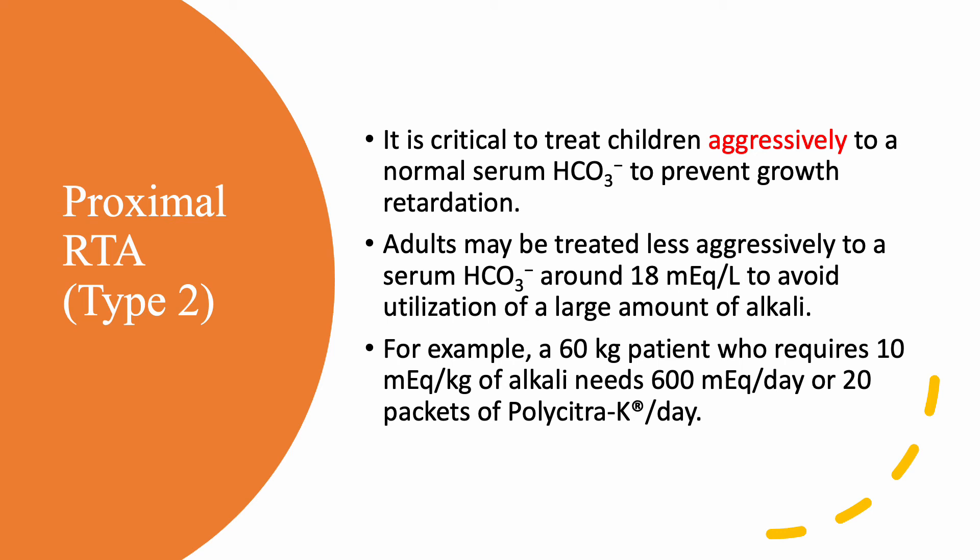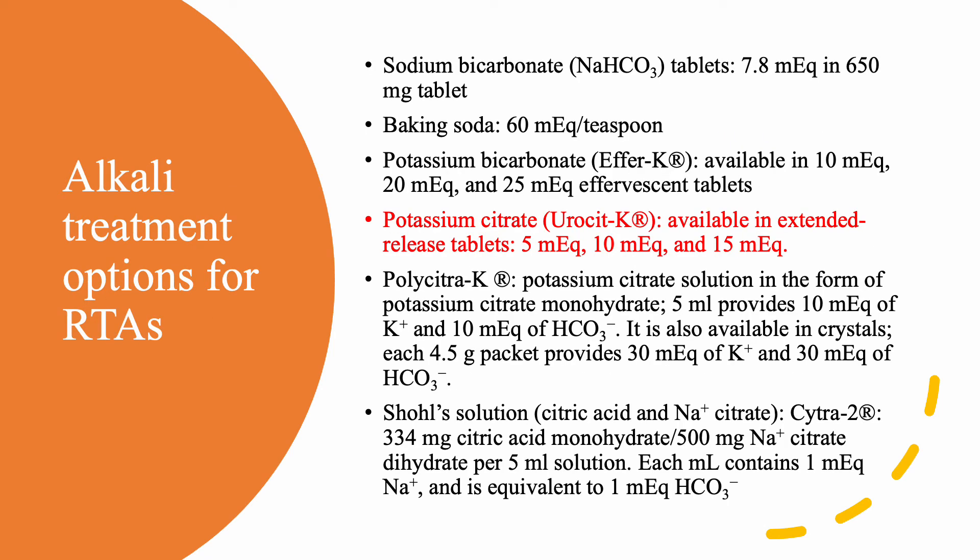For example, a 60-kilogram adult requiring 10 milliequivalents per kilogram of alkali needs 600 milliequivalents per day — that is 20 packets of polycitra potassium per day, which is not easy to manage. For alkali options: sodium bicarbonate tablets provide about 8 milliequivalents per 650 milligrams. Baking soda is very cheap and widely available — each teaspoon has 60 milliequivalents — about the equivalent of 8 tablets — which patients can dissolve in water or a drink.